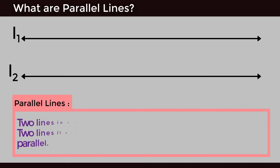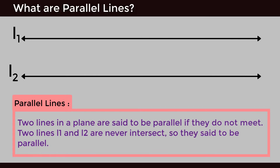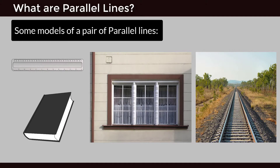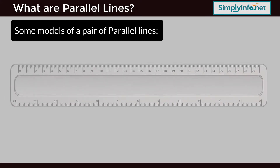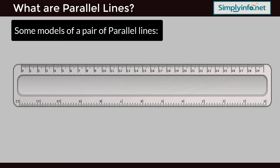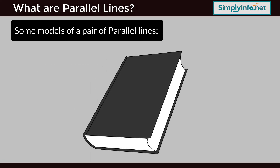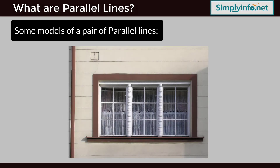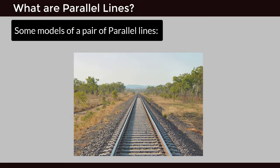Parallel Lines: Two lines in a plane are said to be parallel if they do not meet. Two lines L1 and L2 that never intersect are said to be parallel. Some models of a pair of parallel lines: the opposite edges of a ruler scale, the opposite edges of a book, the cross bars of a window, and rail lines.